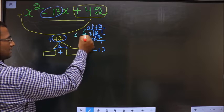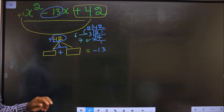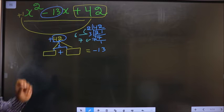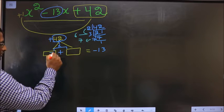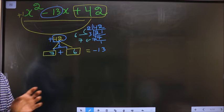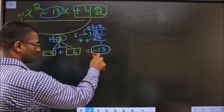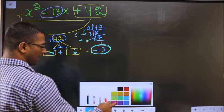6 plus 7 is 13, 6 into 7 is 42. So 7 here, 6 here. Now adjust the signs. I should get here -13, which could only happen if I place minus here and also minus here.